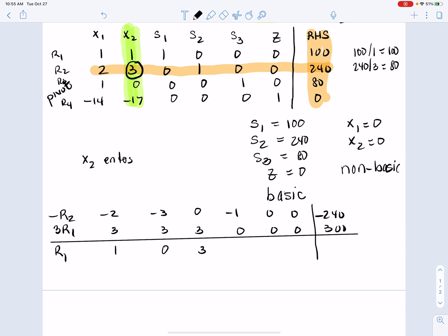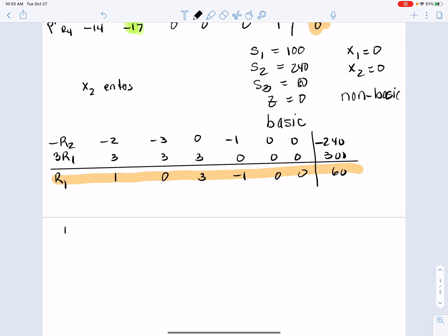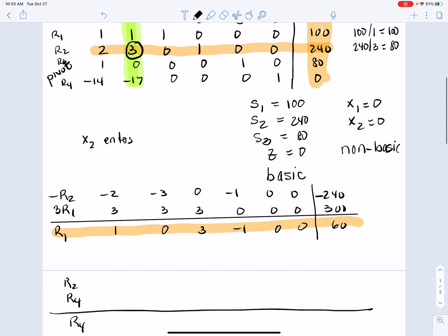And that means the new r1 is going to have a 1 there, a 0 there, a 3 there, a negative 1 there, two 0s, and a 60. So that's my new replacement row. And now what we're going to do is also work on r4. So I'm going to combine r2 and r4 in order to make a new r4.